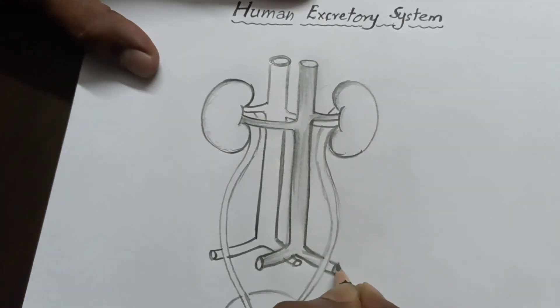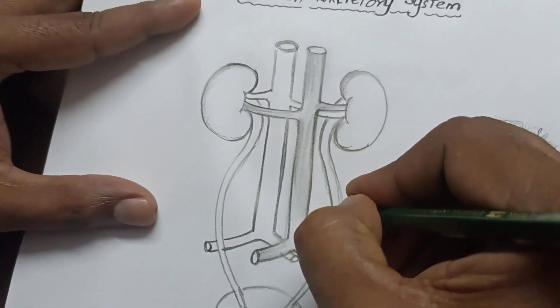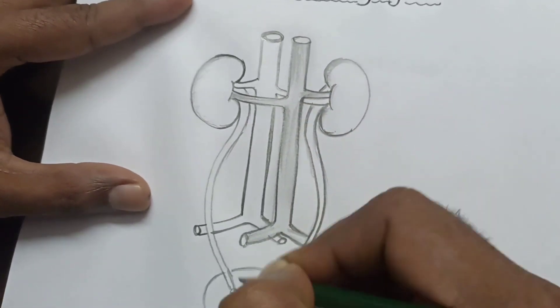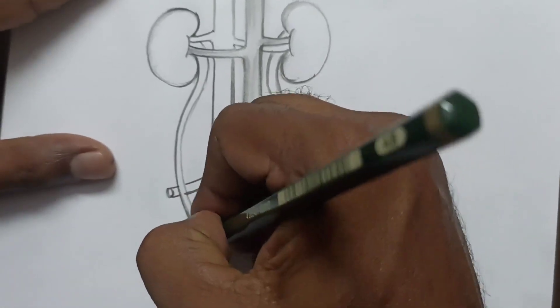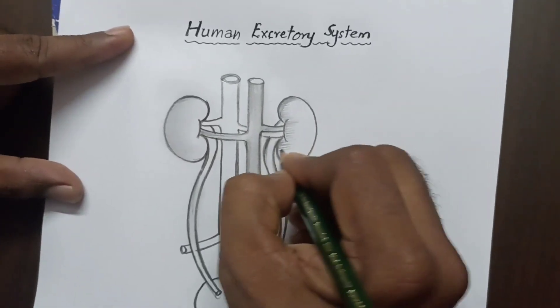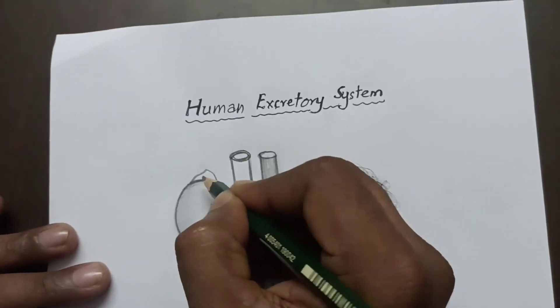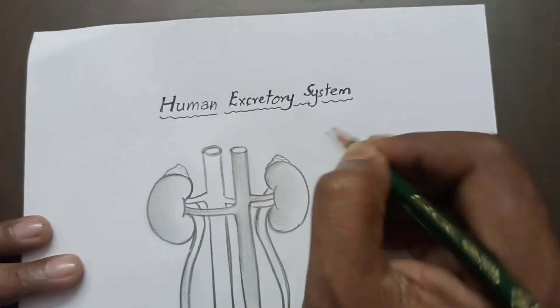You have to shade like this. Now I am going to darken the ureters. I am giving shade to the kidneys. These are adrenal glands which are present on the kidneys.